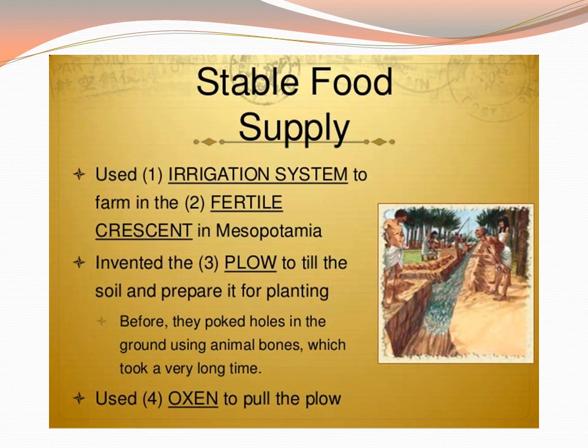This slide gives complete information about the stable food supply and how that was possible — only because of four things. First is the irrigation system: water availability to farms and fields throughout the year brought about a good yield, bumper crops. The next thing was the fertile crescent — the region was rich in soil and the quality of soil was really good, giving good yield. Third was plowing the fields, that is, loosening the soil so that crops can grow well. Earlier, they used animal bones to poke the ground, but over time they learned how a blade could be used to loosen the soil with the help of plows.